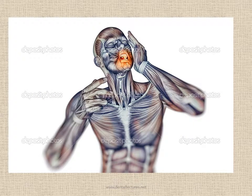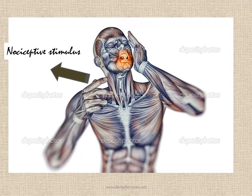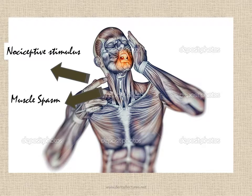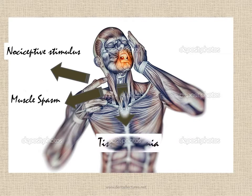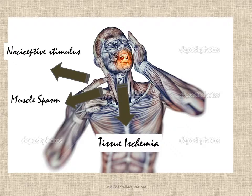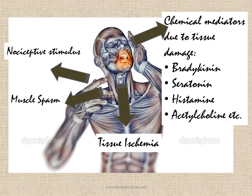Let us first talk about the causes of pain in such an injury. The foremost cause of pain is the nociceptive stimulus that caused the injury in the first place. There may also be a continuous nociceptive stimulus like a broken bone irritating the surrounding tissue or a broken tooth. Additionally, injuries are usually accompanied with muscle spasm as well as tissue ischemia which also contribute to pain. Whereas immediate pain is caused by nociceptive stimulus, the prolonged pain which usually occurs after the injury is caused by chemical mediators like bradykinin, histamine, serotonin, acetylcholine etc., released by the inflamed tissues.